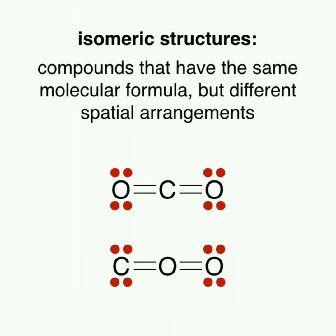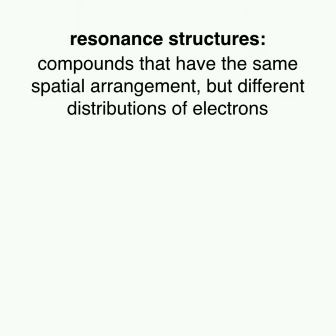For one isomer to convert into the other, bonds would have to be broken and formed. Resonance structures, on the other hand, are compounds that have the same spatial arrangement but a different distribution of electrons among the atoms. We'll look at CO2 again as an example.